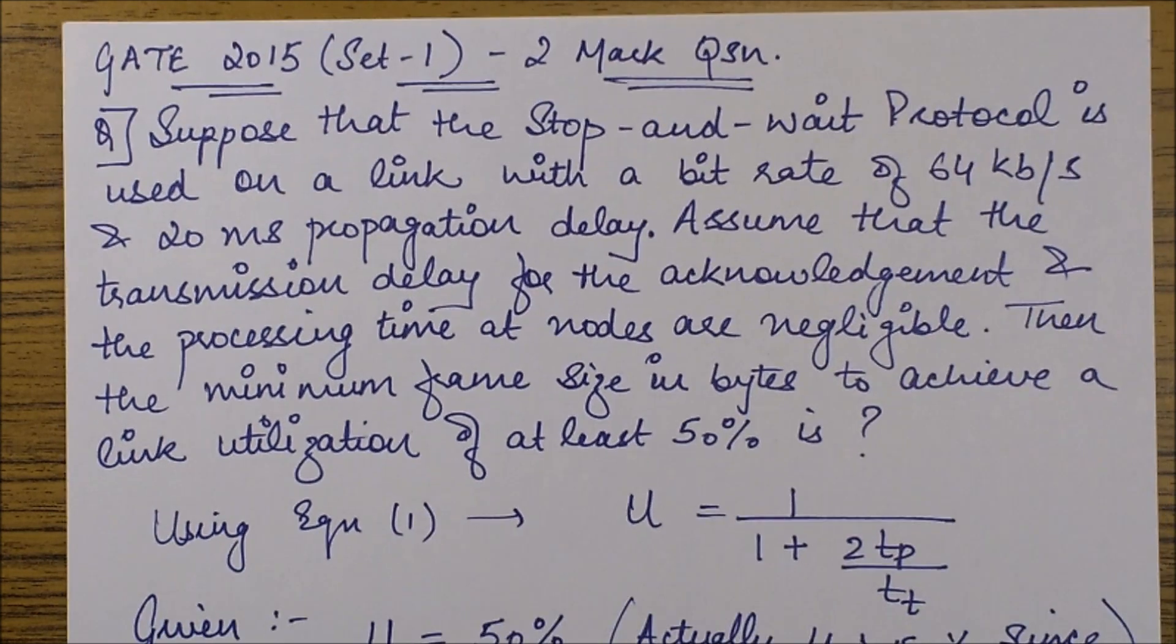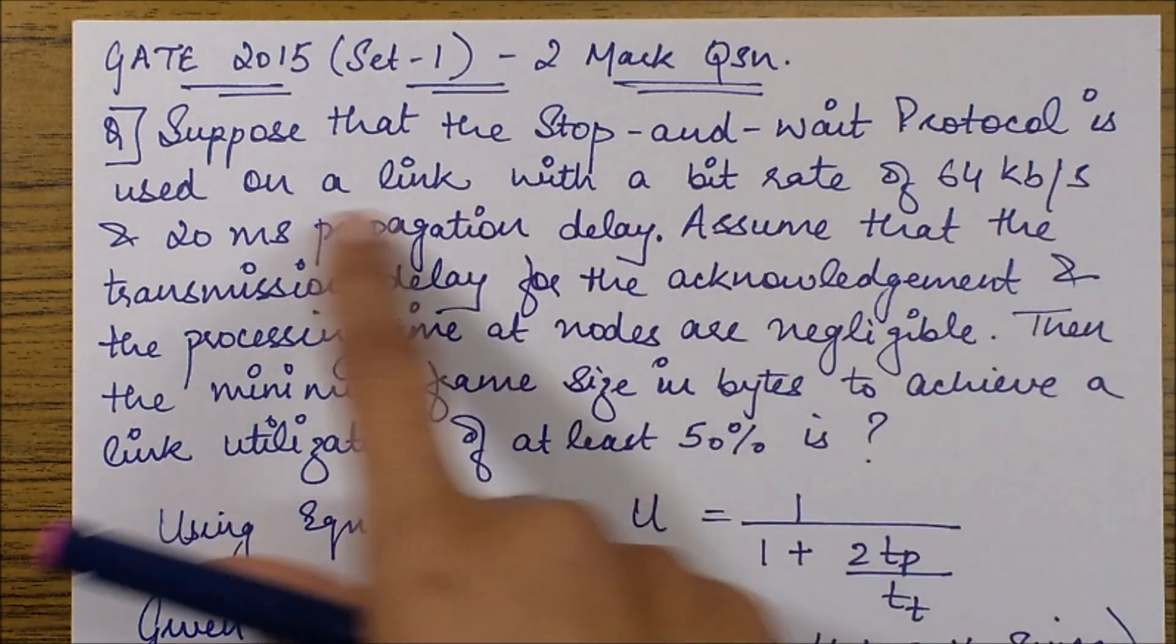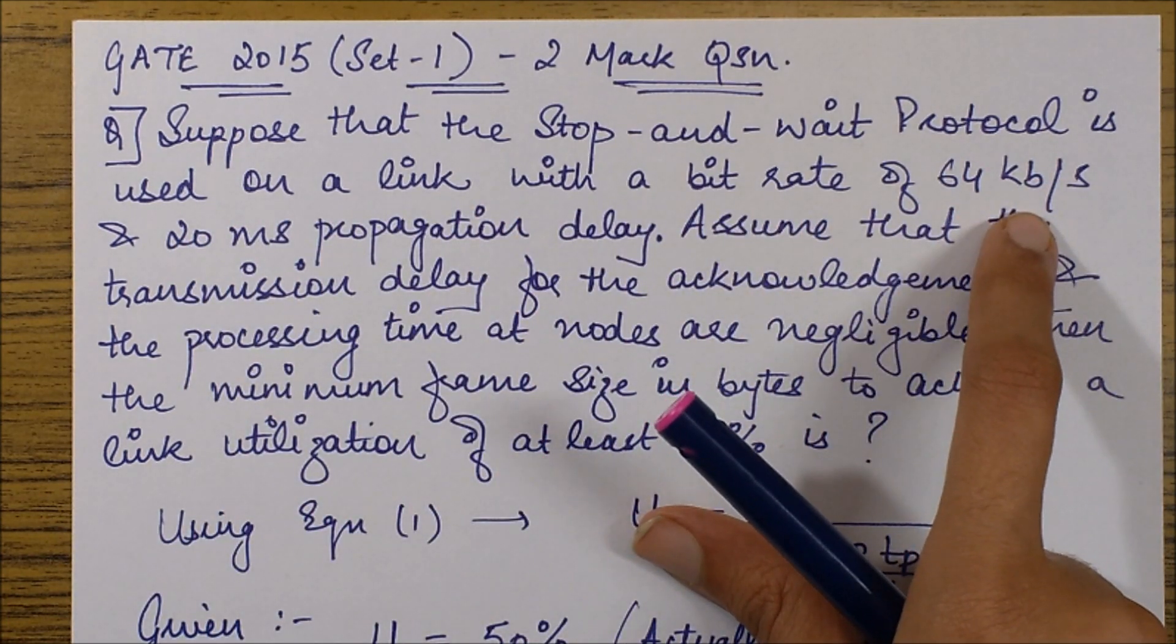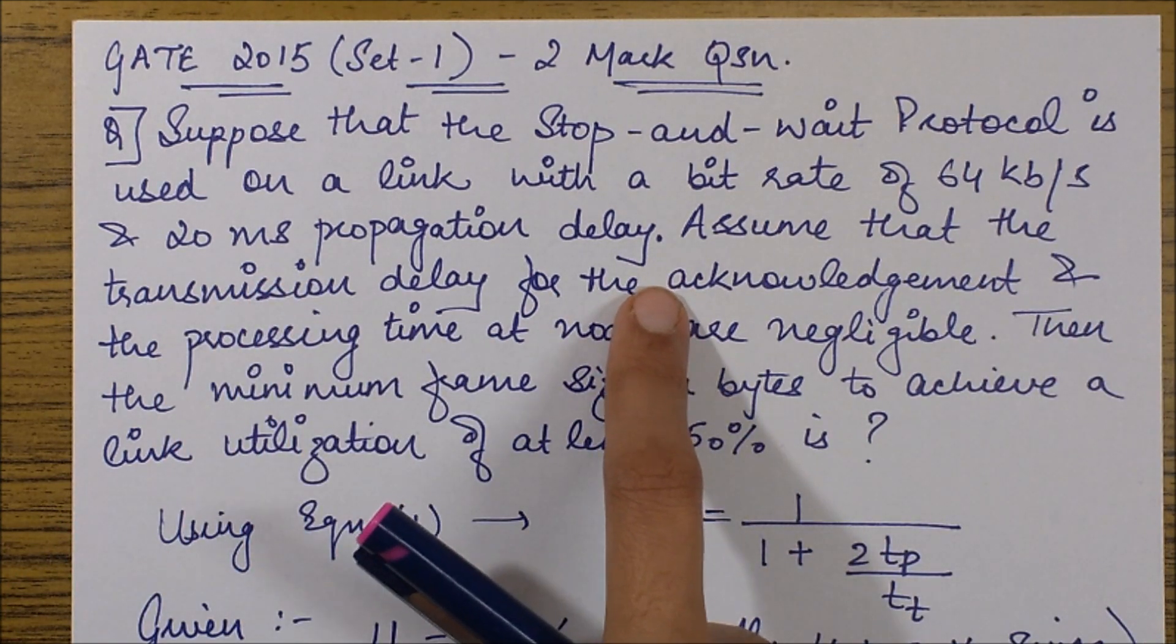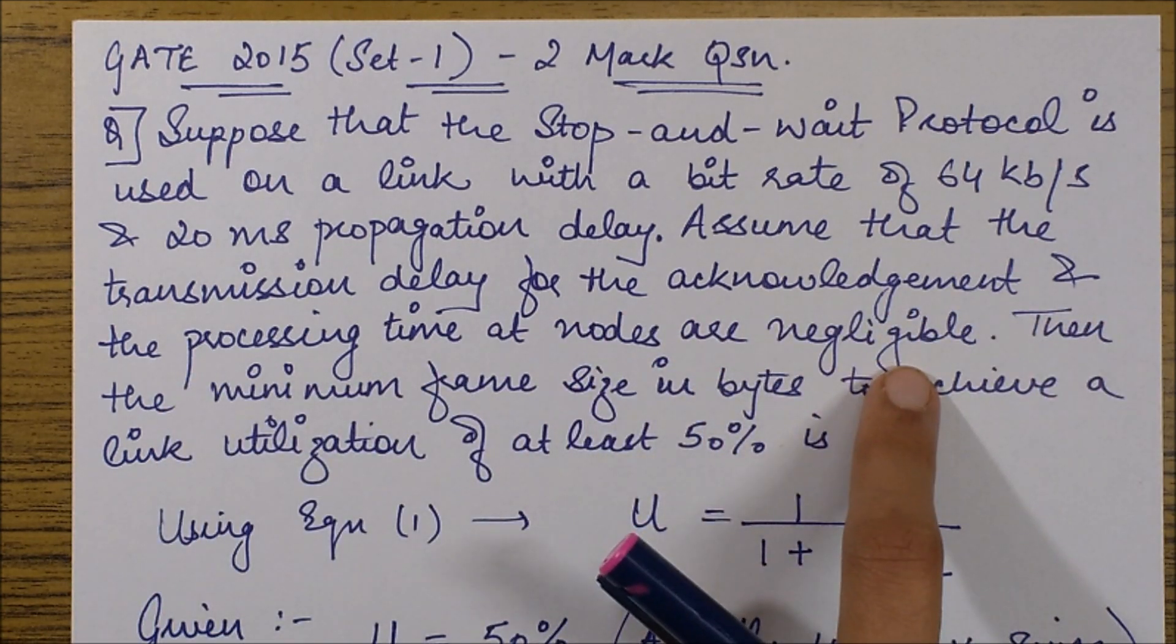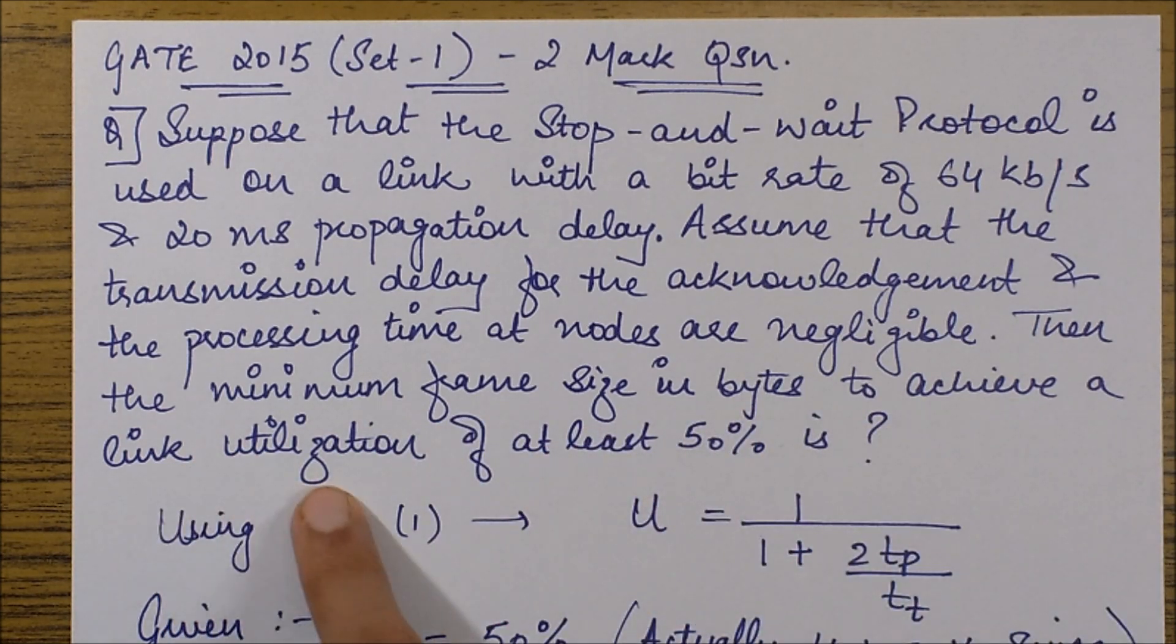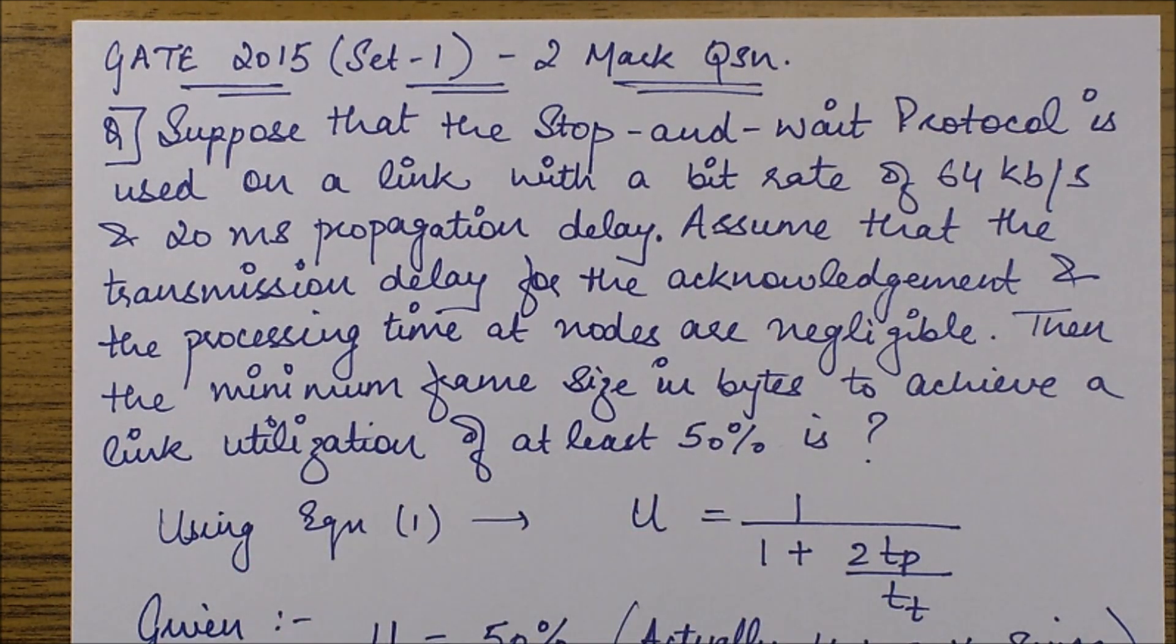In gate 2015 set 1, this was a two mark question. Suppose that the stop-and-wait protocol is used on a link with a bit rate of 64 kilobits per second and 20 milliseconds of propagation delay. Assume that the transmission delay for the acknowledgement and the processing time at nodes are negligible. Then the minimum frame size in bytes to achieve a link utilization of at least 50 percent is what?